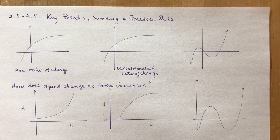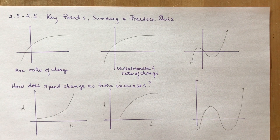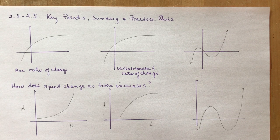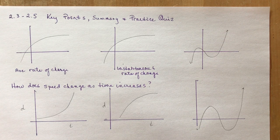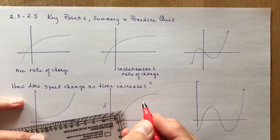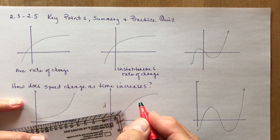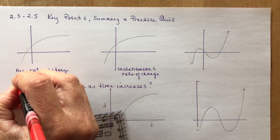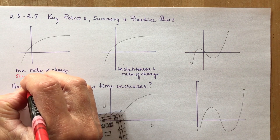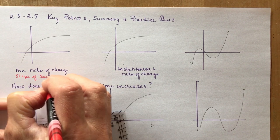The key points in 2.3 to 2.5 cover the things we've talked about already. Average rate of change, remember, is the slope of a secant. If you remember that, you'll have it nailed—slope of secant.